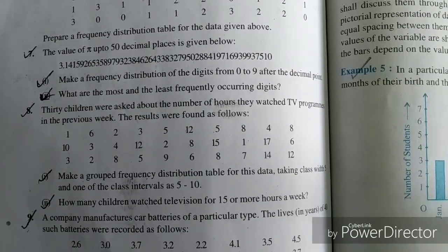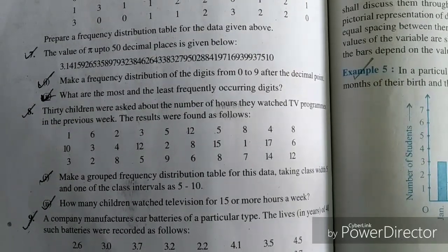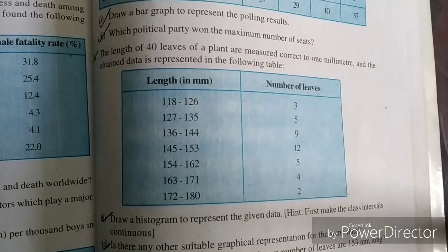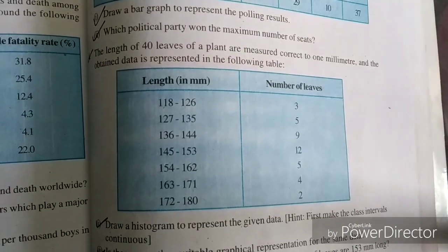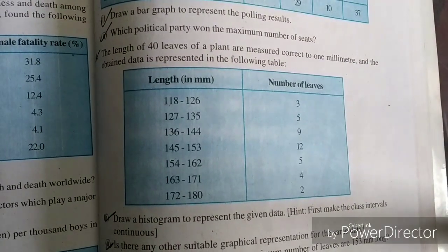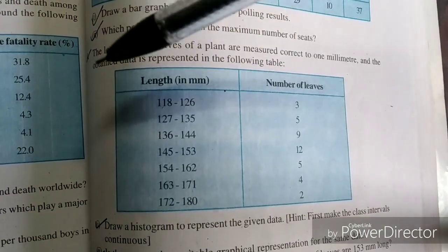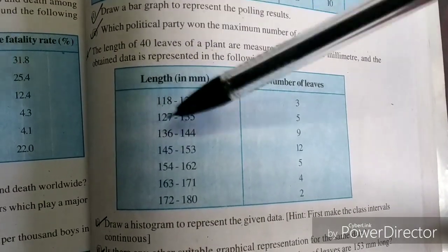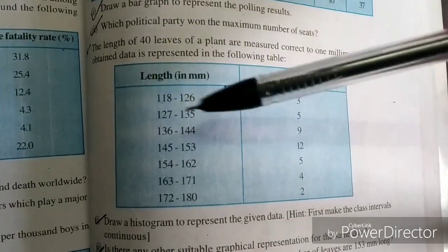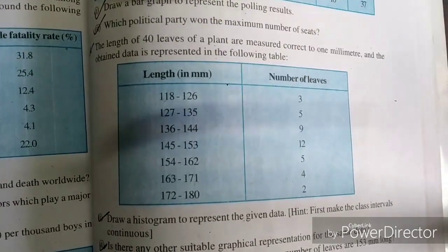Now we will go to frequency polygon. From Exercise 14.3, you practice the fourth question. If you want to change it, make it a little bit different. You have to add a little bit of minus 0.5, so it will get a little bit different for you. You can see the first question.